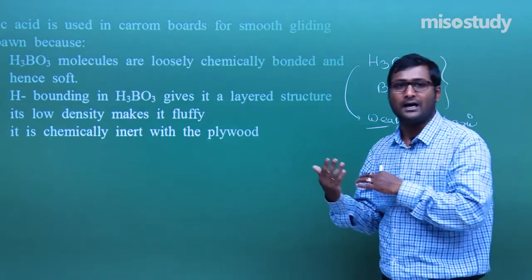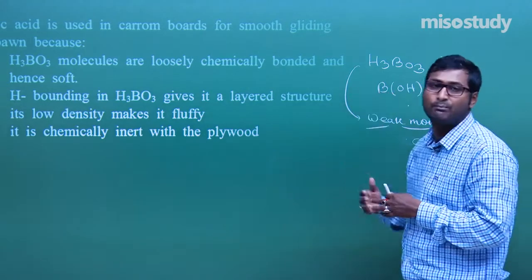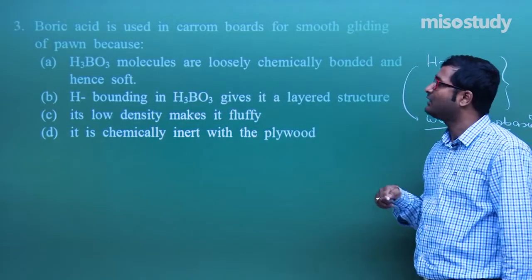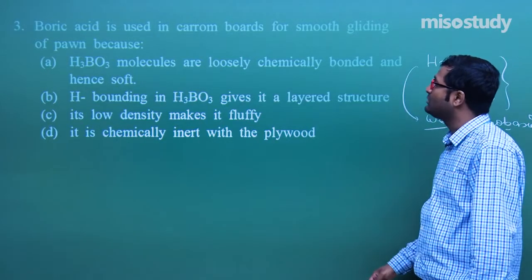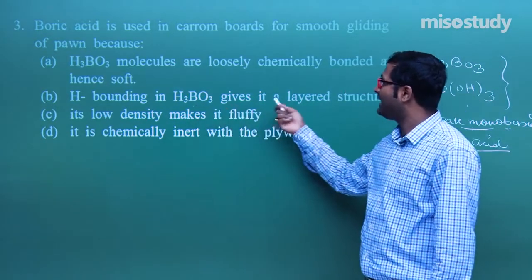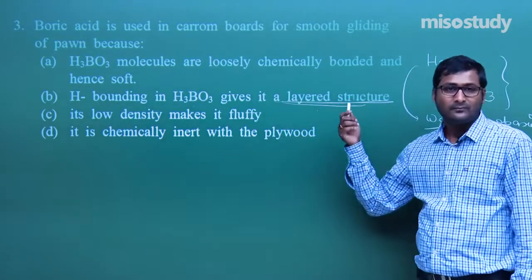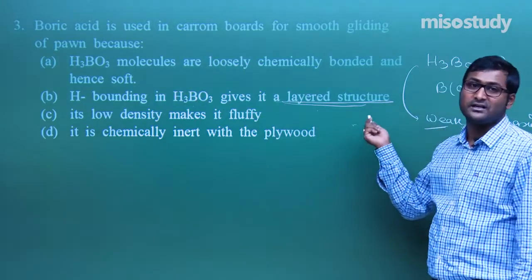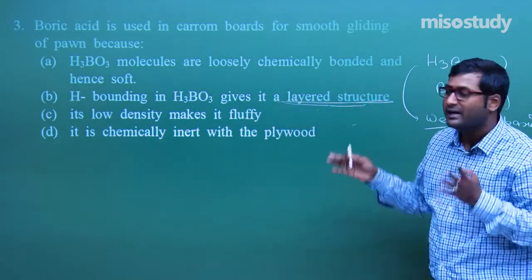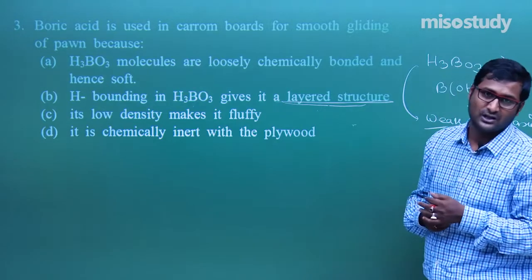In H₃BO₃ there is no van der Waals force, no dipole-dipole interaction, no London dispersion force — there is only hydrogen bonding. Due to this hydrogen bonding, H₃BO₃ molecules link with each other forming a layered structure. This is similar to graphite, which we studied in class 10th — graphite is smooth because of its layered structure. Similarly, H₃BO₃ has a layered structure and is therefore slippery and smooth in nature.